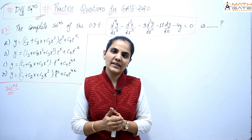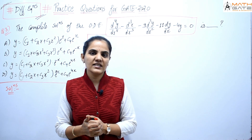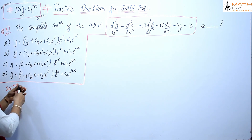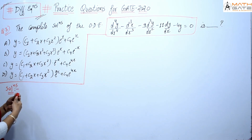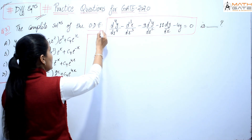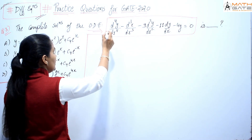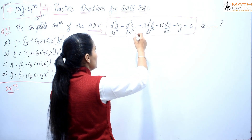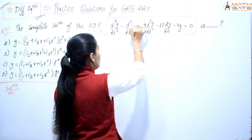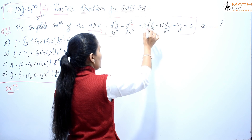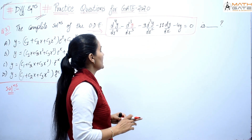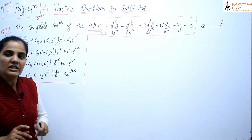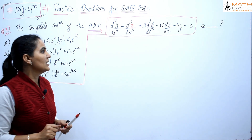Hello students, welcome to Math Gate. Let's discuss the next question of differential equations. The question is: find the complete solution of the ordinary differential equation d⁴y/dx⁴ minus d³y/dx³ minus 9 d²y/dx² minus 11 dy/dx minus 4y equals 0.